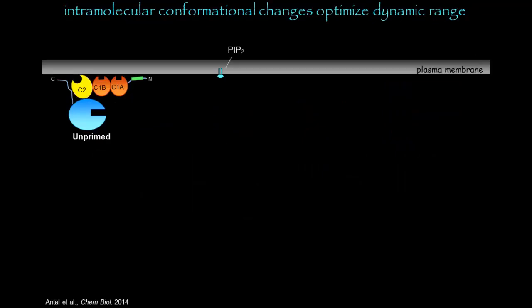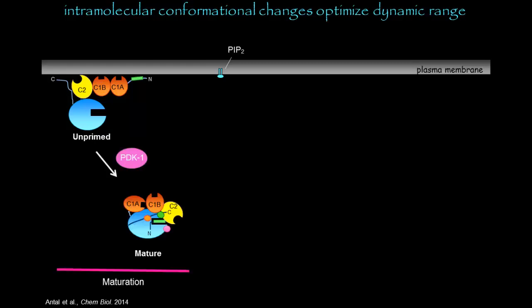Putting this all together, our model is that protein kinase C, when it's newly synthesized, associates with the membrane in an open conformation in which the C1A and C1B domains are fully exposed. It then undergoes intramolecular conformational changes triggered by the phosphorylation events that occur upon priming of the enzyme. This intramolecular conformational change also results in the pseudosubstrate entering the active site and blocking catalytic activity. This form of the enzyme is catalytically competent, but it will not be active until second messengers are present.